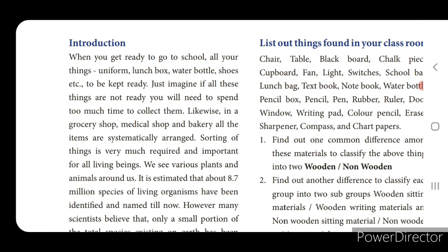Again, if you take non-living things, they can be further classified — wooden materials, plastic materials, iron materials, glass materials like that. This is what is explained in the introduction part.